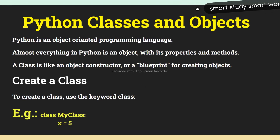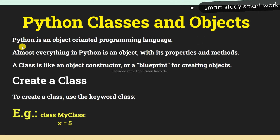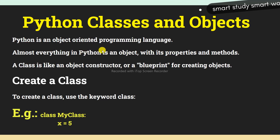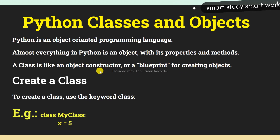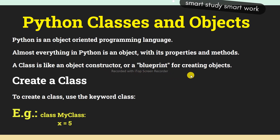Hello friends, today's topic is Python classes and objects. First of all, what are classes and what are objects? Python is an object-oriented programming language. Almost everything in Python is an object with its properties and methods. A class is like an object's constructor or a blueprint for creating objects.